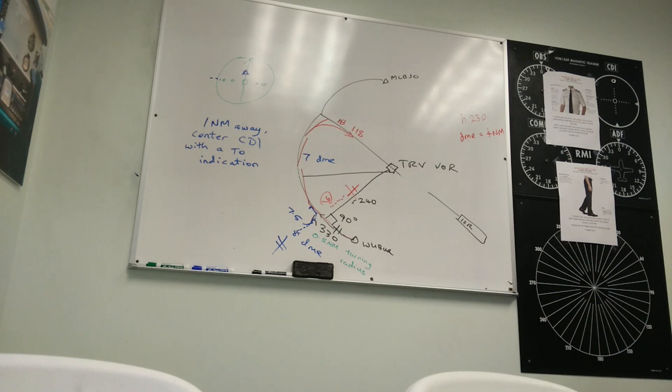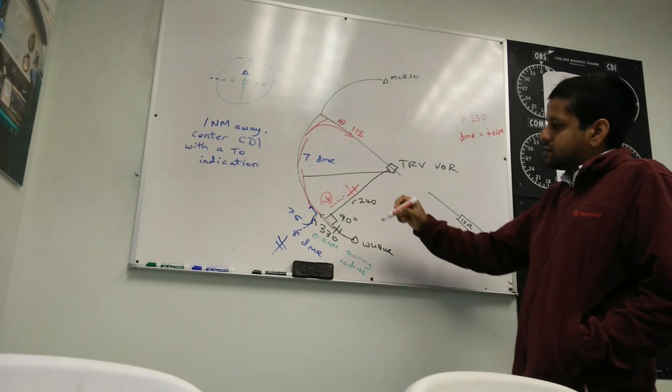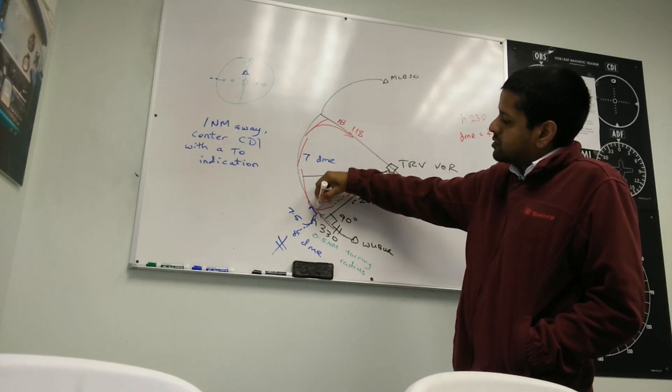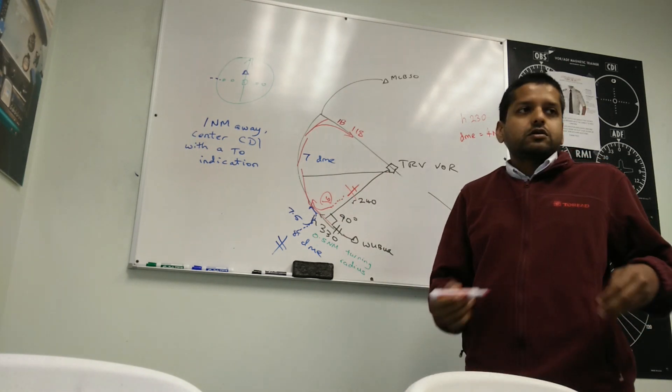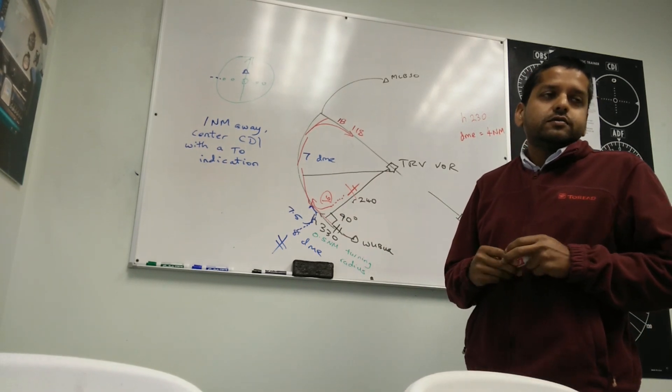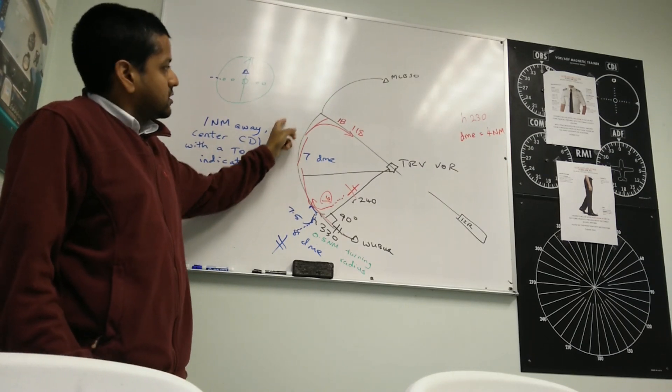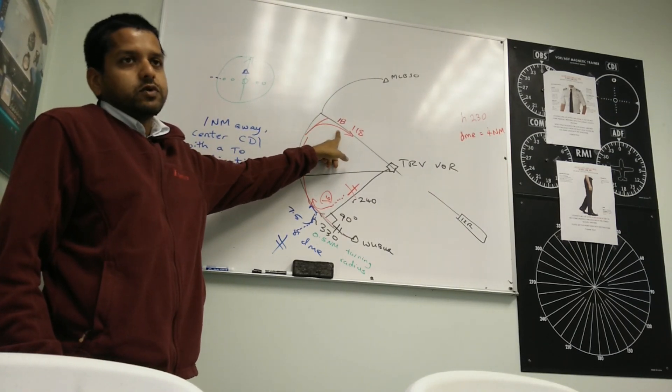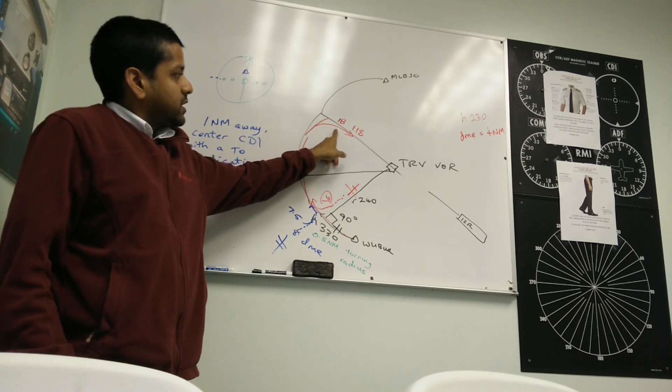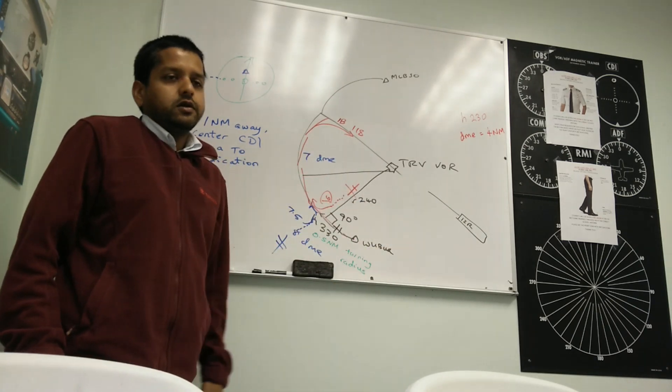6 DME will center the needle. Center the needle at 10. Look at the dots. 6.5, turn right. Turn right to join our arc. You join the arc. Twist 10, turn 10, twist 10, turn 10 until you reach your final twist of 118. Needle starts coming in on 118, start turning inbound.